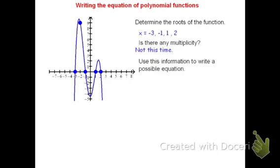I can use this information to write a possible equation. When I say possible and not the equation, that's because I don't know the stretch factor yet. All I know is that I have something times the quantity x plus 3, times the quantity x plus 1, times the quantity x minus 1, times the quantity x minus 2. I found those factors by saying: if x equals negative 3, the factor x plus 3 equals 0 gives me x equals negative 3. Or if x equals negative 1, the factor has to be x plus 1, because when you solve x plus 1 equals 0, that gives you negative 1.